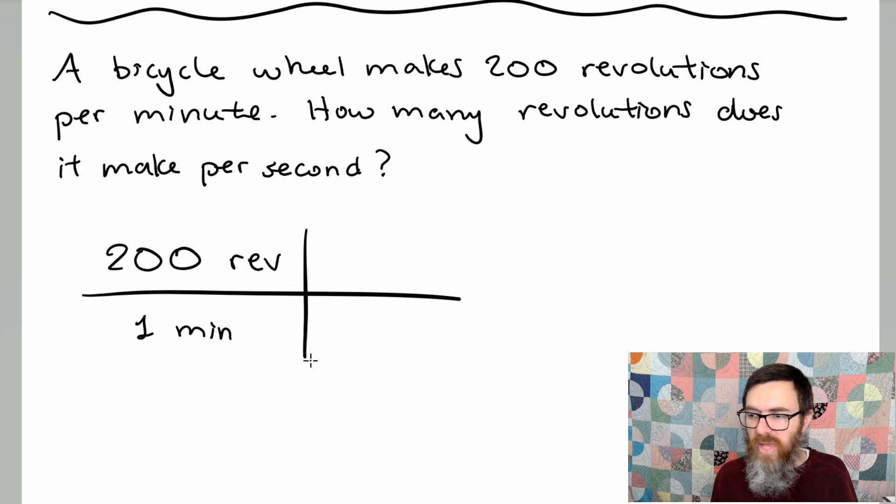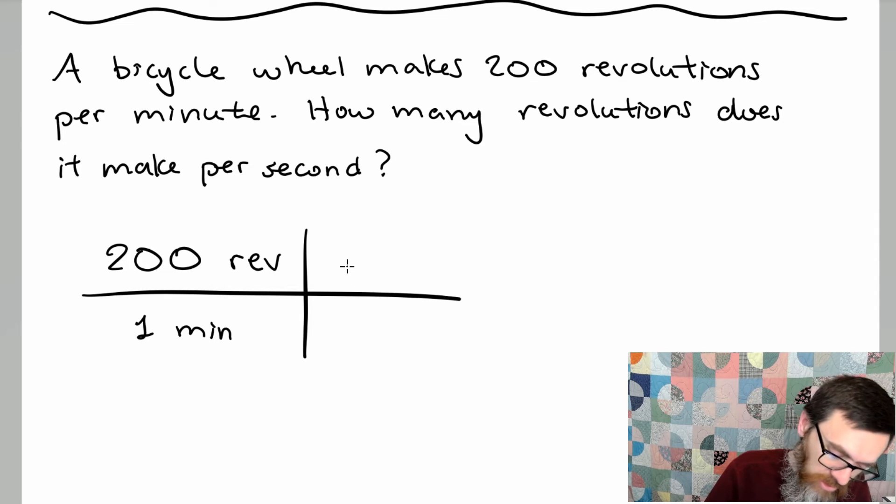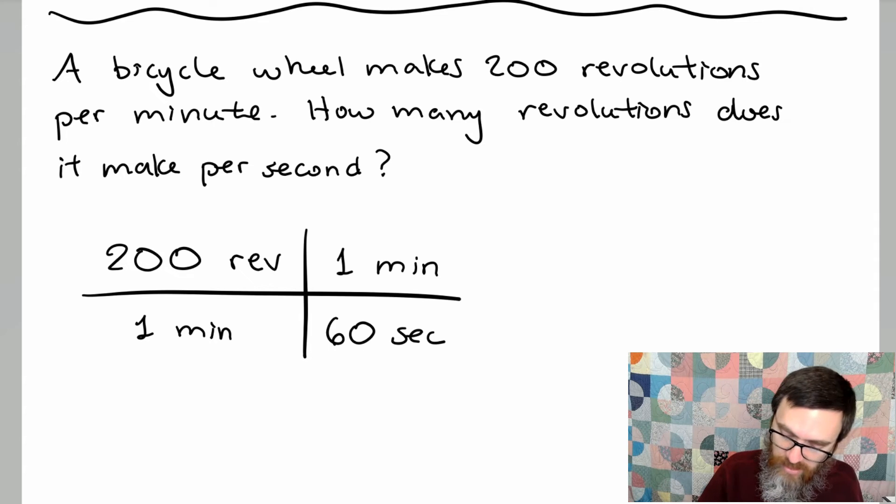So we know that 60 seconds and a minute are the same thing. We just have to make sure we put these in the right spot so that the unit of minutes will reduce. So for every one minute we have 60 seconds. Minutes will reduce. And we end up with 200 over 60.